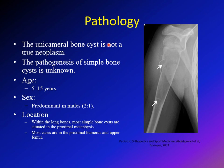Simple bone cysts, or unicameral bone cysts, are not true tumors — there is no proliferation of cells. The exact pathogenesis is unknown. They are usually seen between ages 5 and 15, are slightly more predominant in males at a ratio of 2 to 1. The most common location is the proximal metaphysis of the humerus and femur, with the proximal humerus being most common.